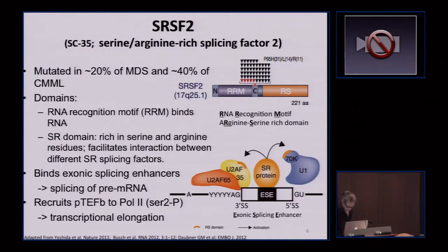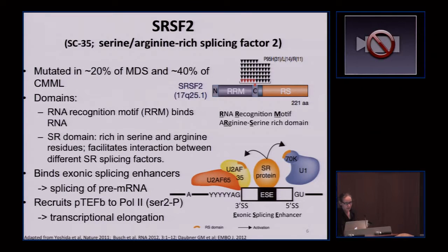My laboratory is particularly interested in the splicing factor SRSF2, or serine-arginine-rich splicing factor 2. SRSF2 is mutated in about 20% of MDS and about 40% of CMML. It has two domains: an RNA recognition or RNA binding domain and a serine-arginine-rich domain. The mutations occur in only one amino acid — proline-95, mutated to histidine, leucine, or arginine. SRSF2 binds exonic splicing enhancers, interacts with other spliceosome factors, and affects exon inclusion or exclusion. It also possibly recruits PTF-B to POL2, affecting transcription and elongation.